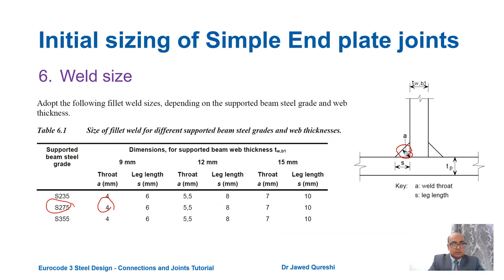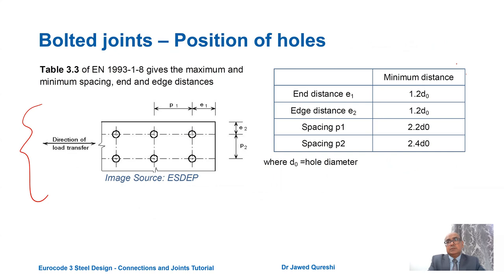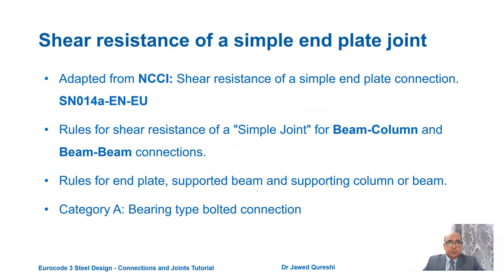For weld size, if using S275 steel, the throat dimension 'a' and leg length 's' — s can be 6mm for a 9mm web thickness; for other web thicknesses there are different leg and throat dimensions. The position of bolts comes from Table 3.3 in Eurocode, covering minimum end and edge distances and spacing p1 and p2.